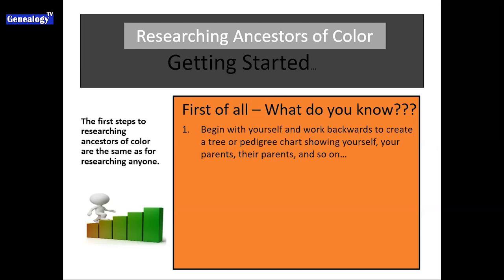Then you want to begin with yourself, just like with any research, and work your way backwards. You'll be creating a tree or a pedigree chart as you're doing this, showing yourself and your ancestors as far as you know them. The biggest difference between doing a tree and a pedigree chart is that a pedigree chart only documents your direct line ancestry, whereas a tree documents your direct ancestry as well as any spouses and children those couples may have had — a fuller picture of your family history.